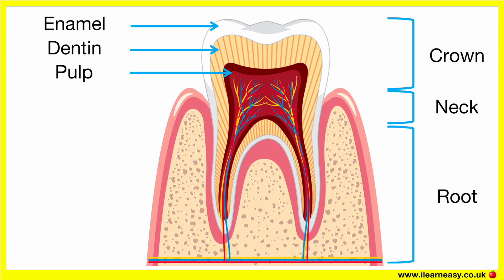Root. The root is the part of the tooth that's embedded in the jaw bone, anchoring it into place. The root helps hold the tooth securely in the mouth, providing stability and support. It also contains the root canal, which houses nerves and blood vessels.